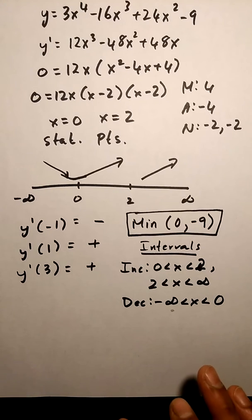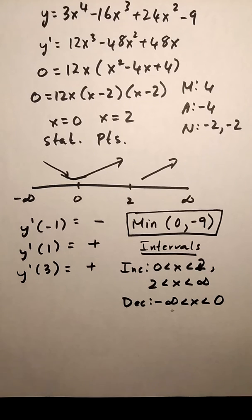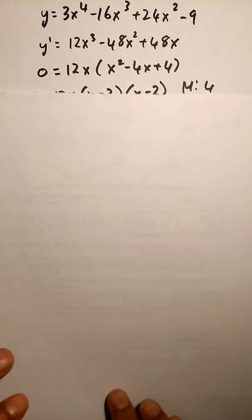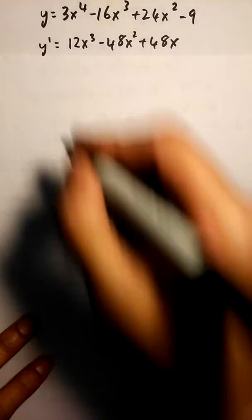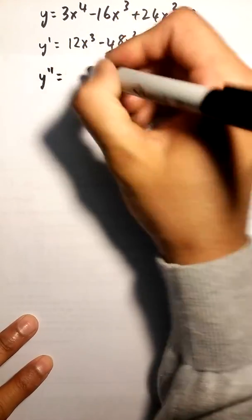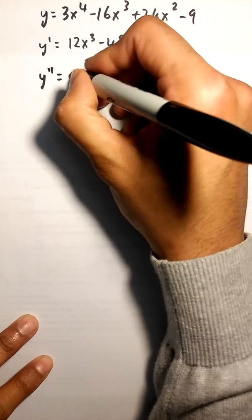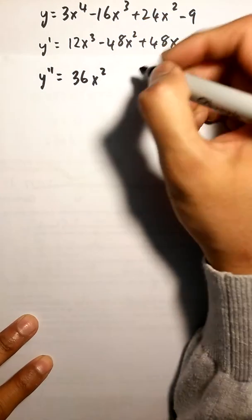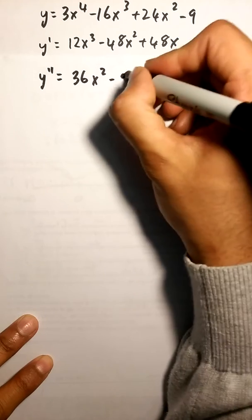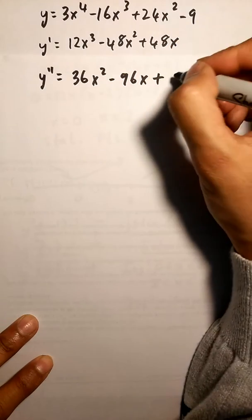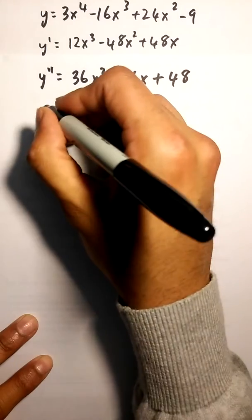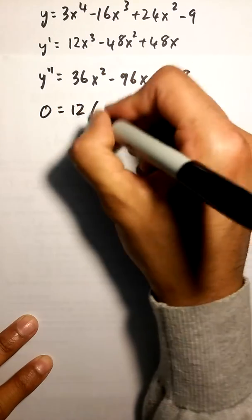Next, I'm going to do my double derivation, find my inflection points, make it equal to zero and factor as well.